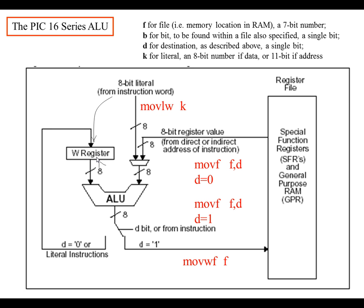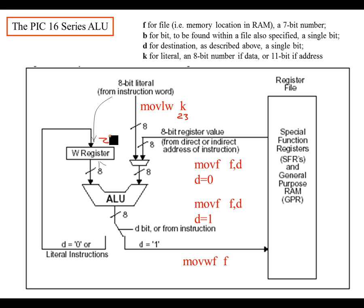Here's a pictorial description of how the commands work. The move literal to W command takes a literal value that you put in your code and transfers it from your flash memory, your program code, to the actual W register. For example, move literal W — if I type this command and put a value of 23, it's going to take that 23 and move it down through this path and store it into the W register.